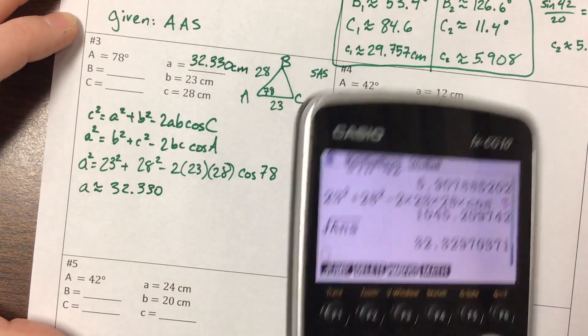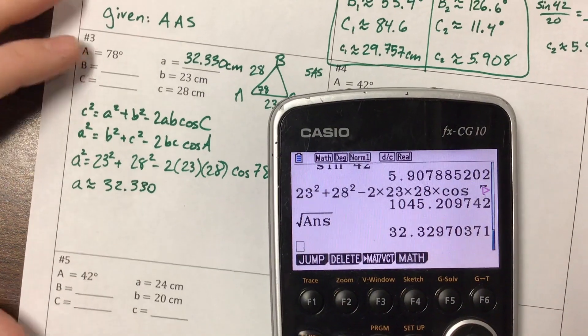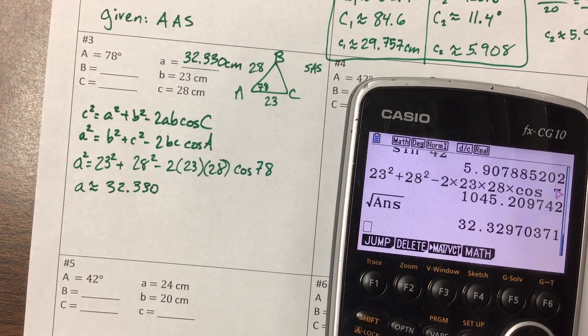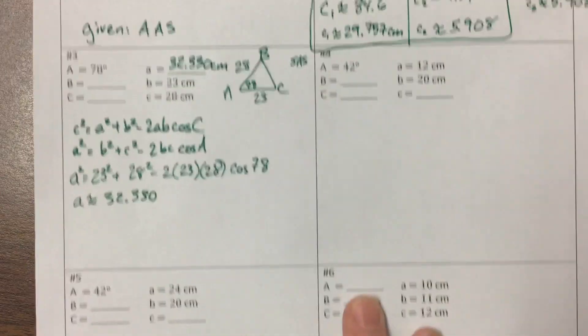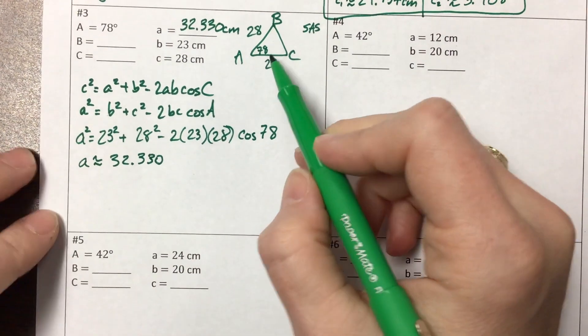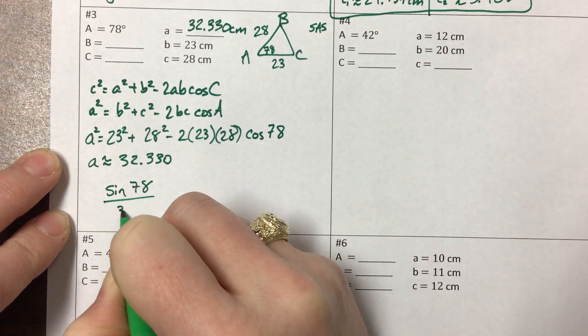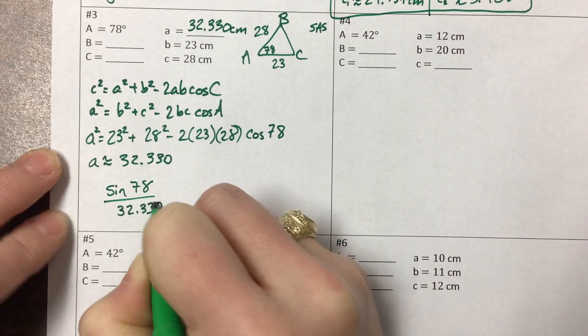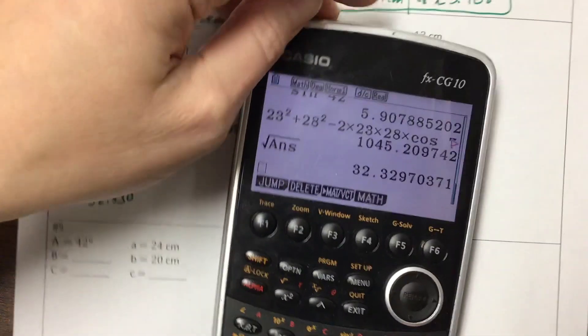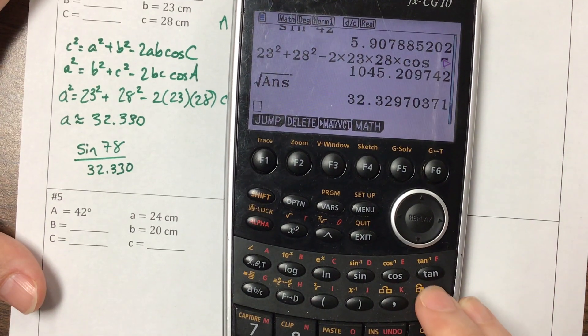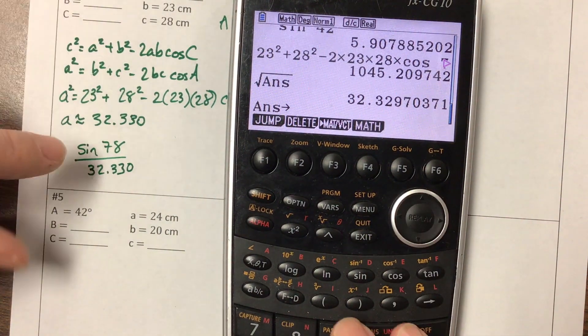Okay, so then the next thing I need to do is find another angle, and I can do that with the law of sines. So we'll say sine of 78° over 32.330. And I actually, at this point, I'm gonna show you how to store. I talked about that in video 2. I'm gonna take that previous answer and store that as little a.